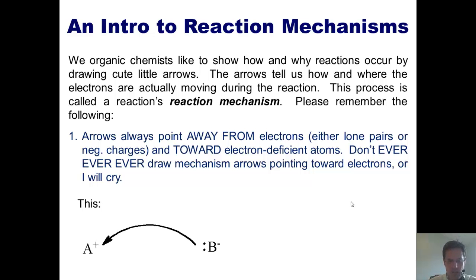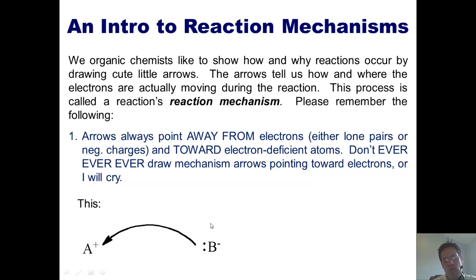Let me show you an example. I've got an atom B that has electrons and is going to attack electron-deficient atom A. I always draw the arrow going from the electrons into the other atom, not the other way around. I like to imagine that the atom with the electrons is like an archer firing an arrow over a wall and into the other atom. I would never point the arrow in the opposite direction.